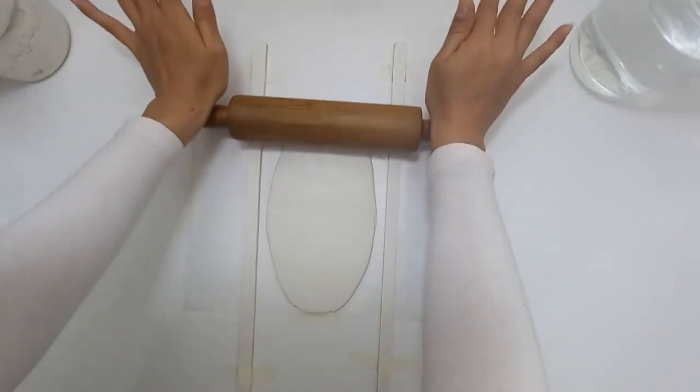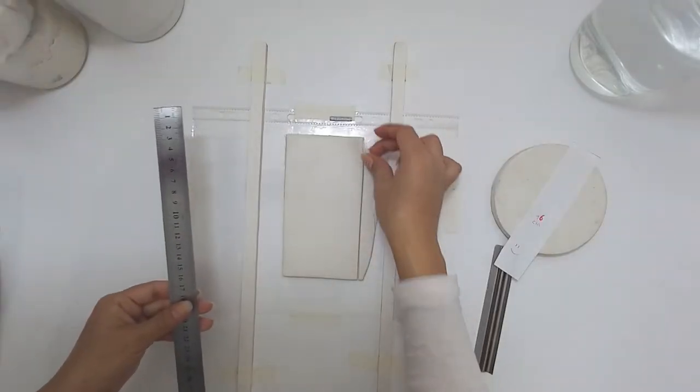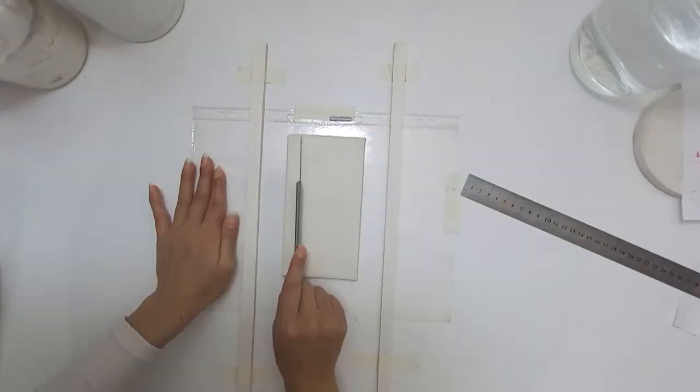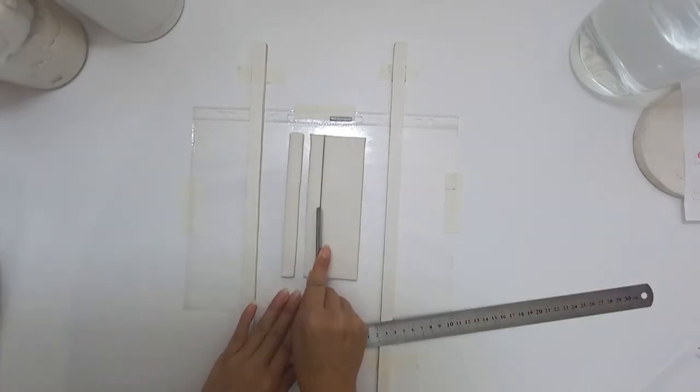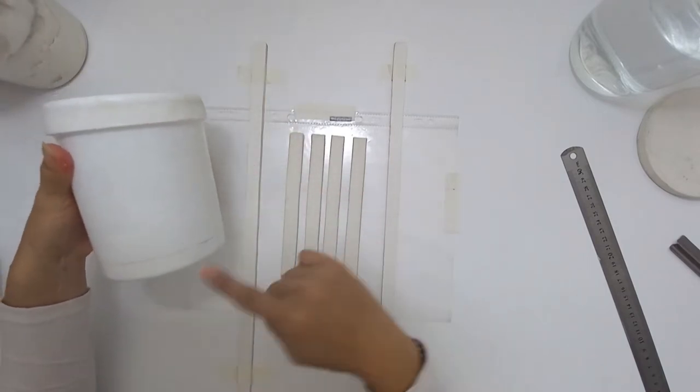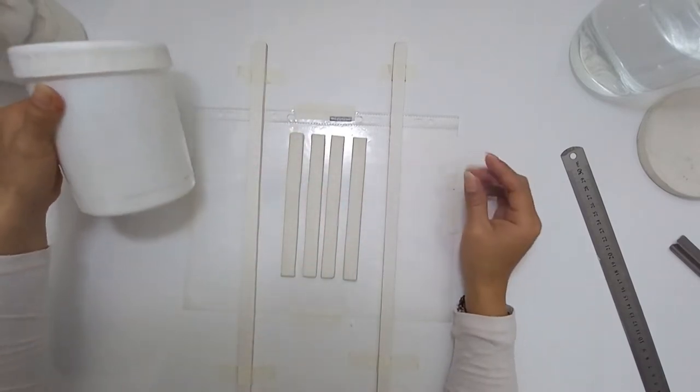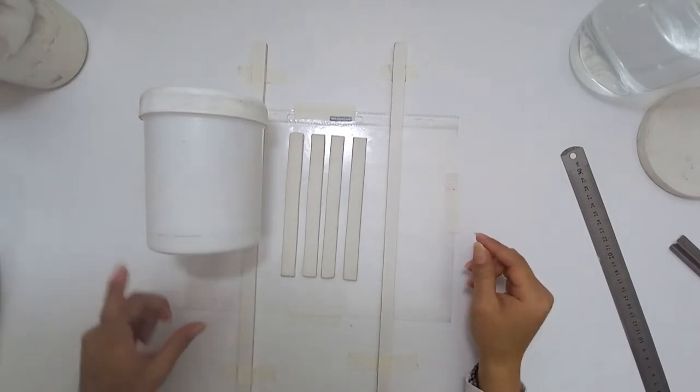I'm gonna cut four strips. The measurements are 1.5 of width per 17 of length. I'm cutting four because I'm doing two trays. This is a container that I'm gonna use. If you have a similar one that will work, it doesn't matter actually if it's a bit smaller or larger.